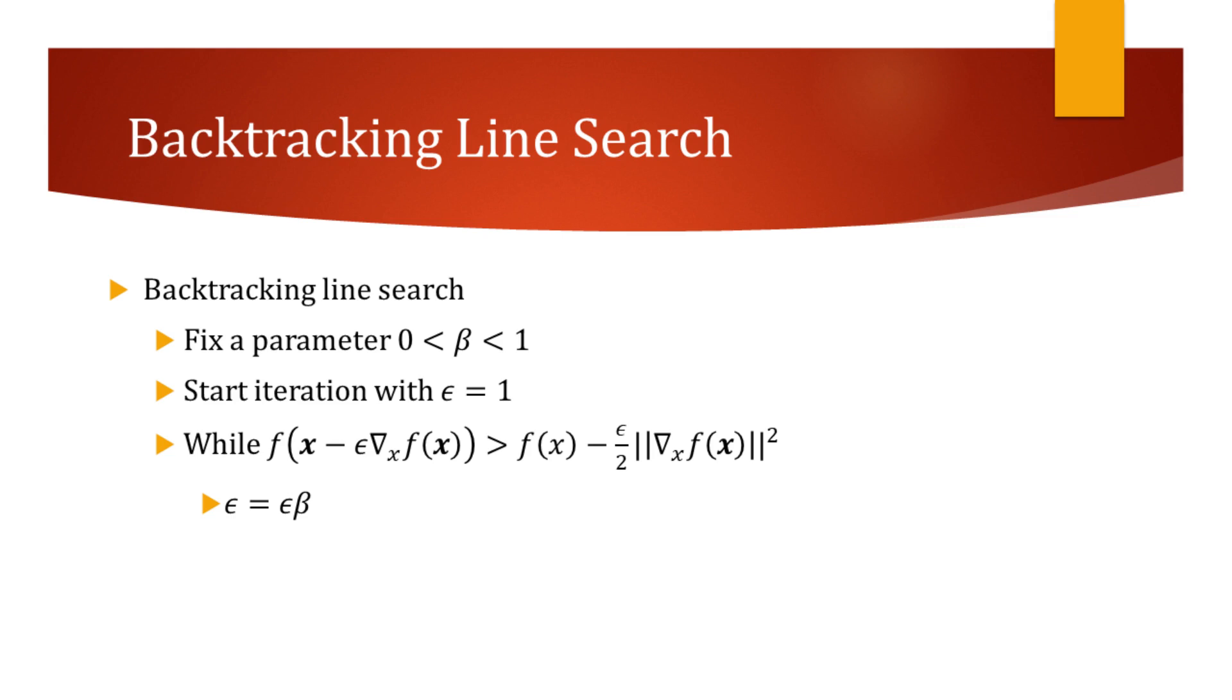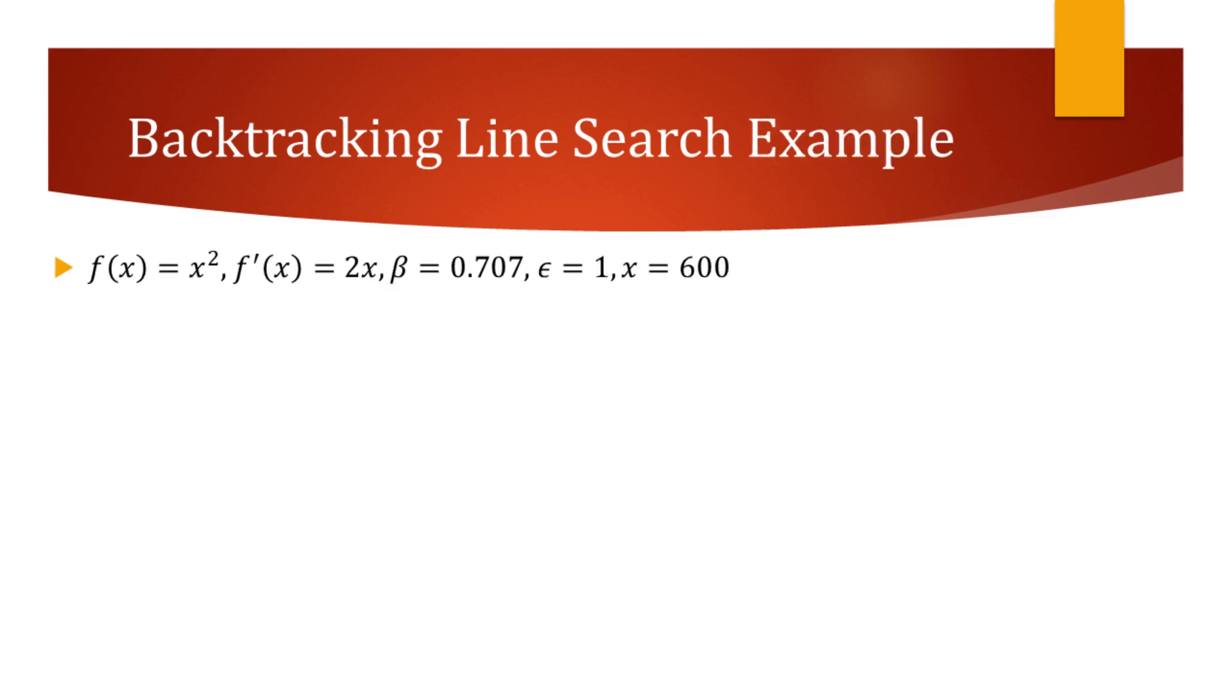Since we've familiarized ourselves with the algorithm, let's do one example by hand. We will try to minimize the function that squares the input. For this problem, we will use beta equal to 0.707 and start minimization with initial point of 600.